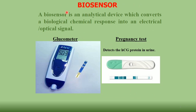A biosensor is an analytical device which converts a biochemical response into an electrical or optical signal. Two commonly used examples are the glucometer and the pregnancy test. Glucometers are often used to measure the level of glucose in sweat or blood, whereas the pregnancy test detects the HCG protein in urine.